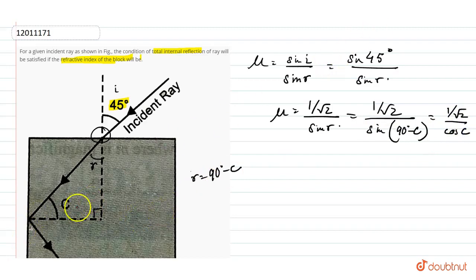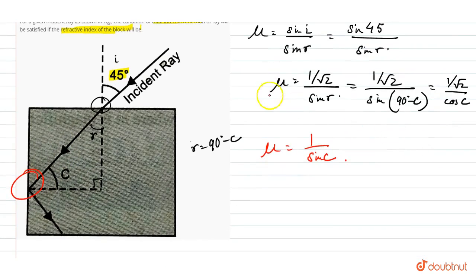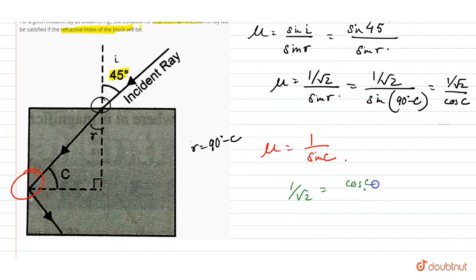That means mu equals 1 upon root 2 upon cos C. Now we know that mu is equal to 1 upon sine C. We equate the two expressions for mu, so 1 upon root 2 is equal to cos C upon sine C. That means tan C equals root 2.